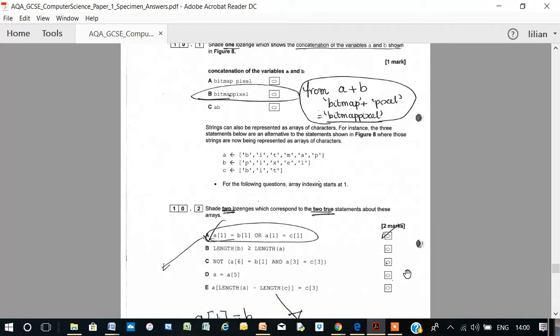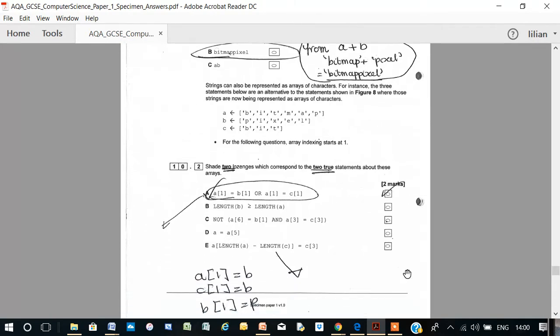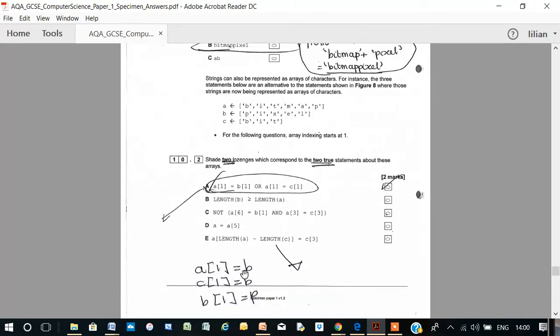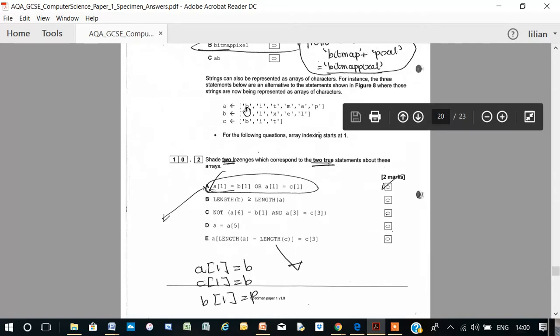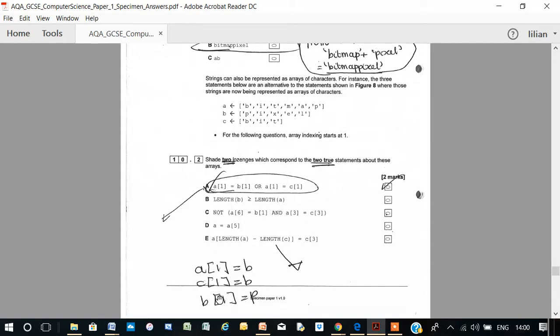Let's just take the first one. A is A1 equals B1 or the expression A1 equals C1. So, A1 is, what's A1? A1 is B. See, A1 is B there. A2 would be I. C1 is also B. And B1 is P.